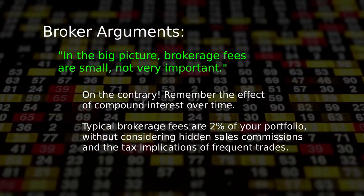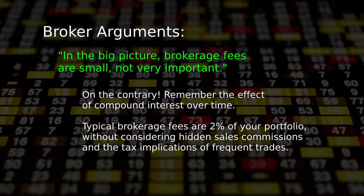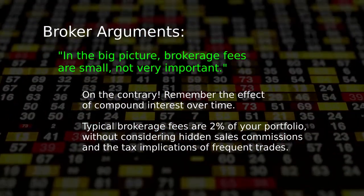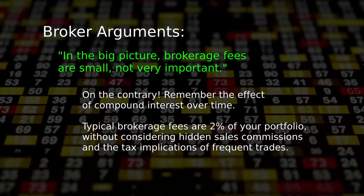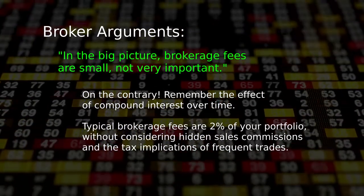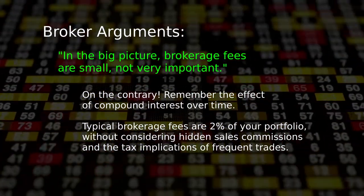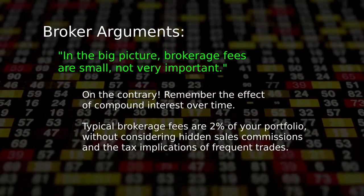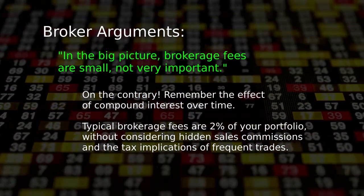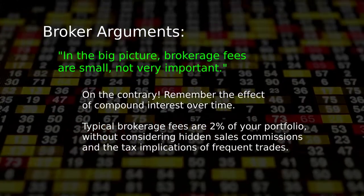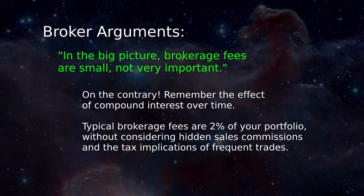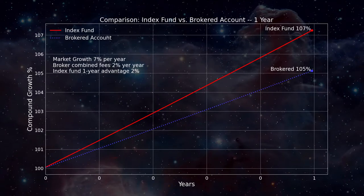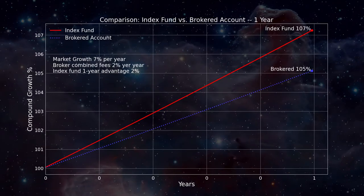Oh, on the contrary — remember the amplifying effect of compound interest. Typical brokerage fees are 1 to 2% of a client's portfolio. I use 2% to account for the less obvious drawbacks to having a managed account, like the tax implications of frequent trades and the additional burden of sales commissions, which are often concealed from the investor. For the market itself, I chose a growth figure of 7%, consistent with recent trends and the study quoted earlier.